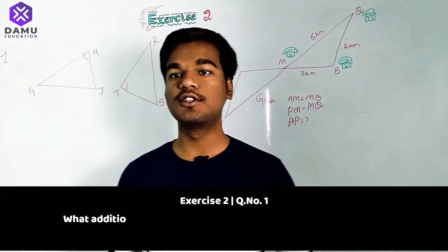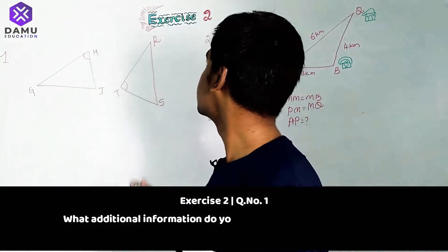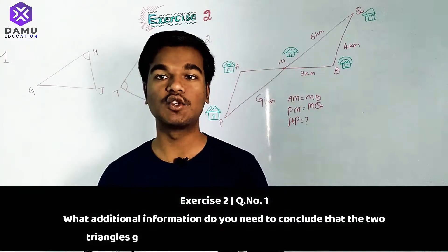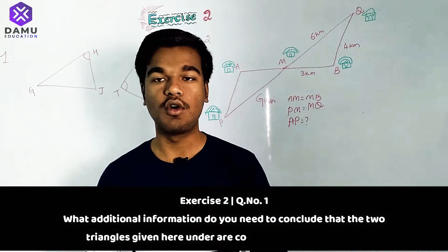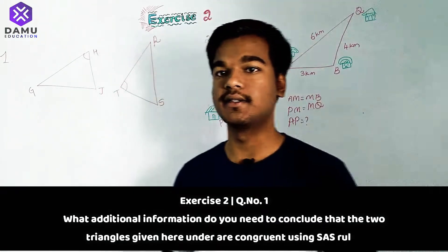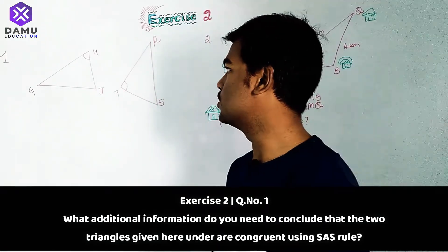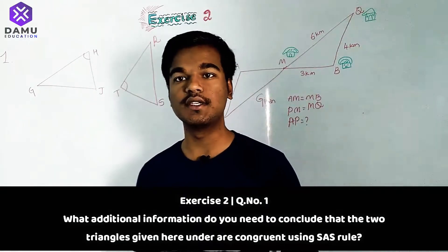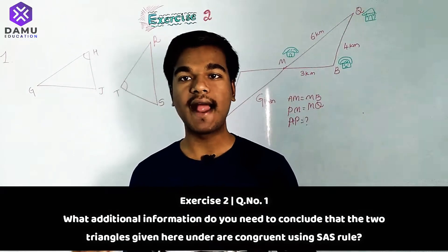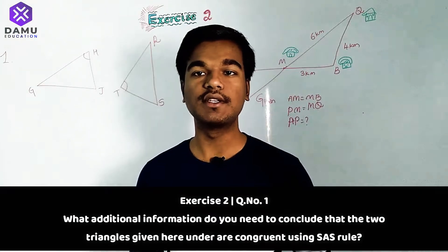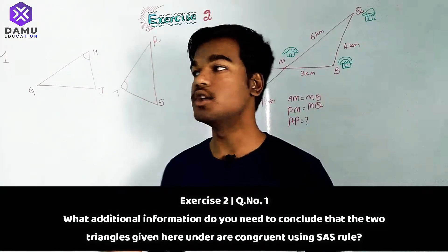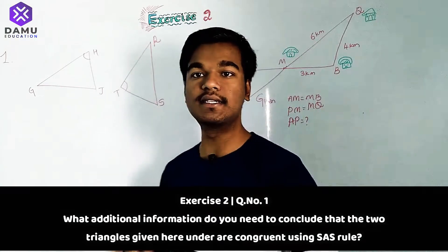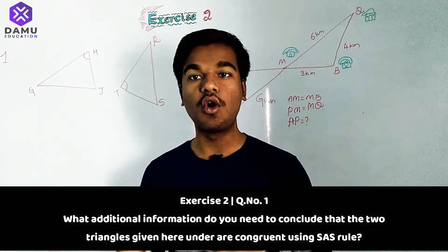In this module we're going to discuss the solutions for exercise two in congruency of triangles. The first question asks: what additional information is required to show these two triangles are congruent to each other?